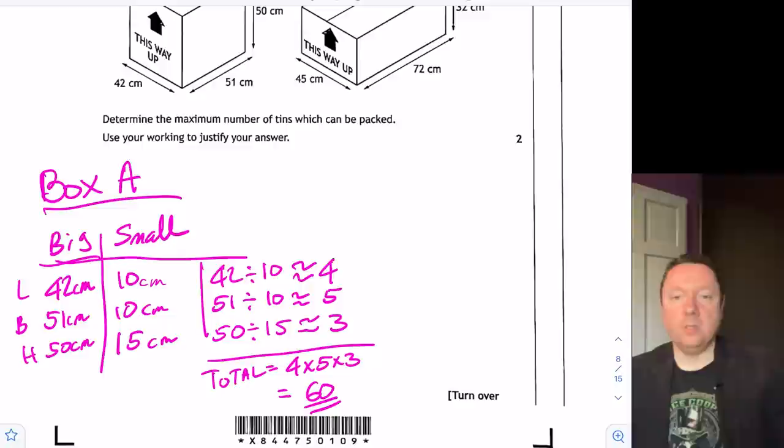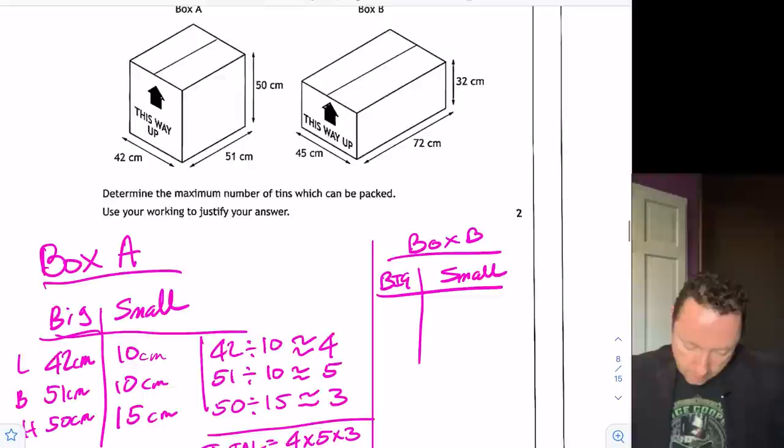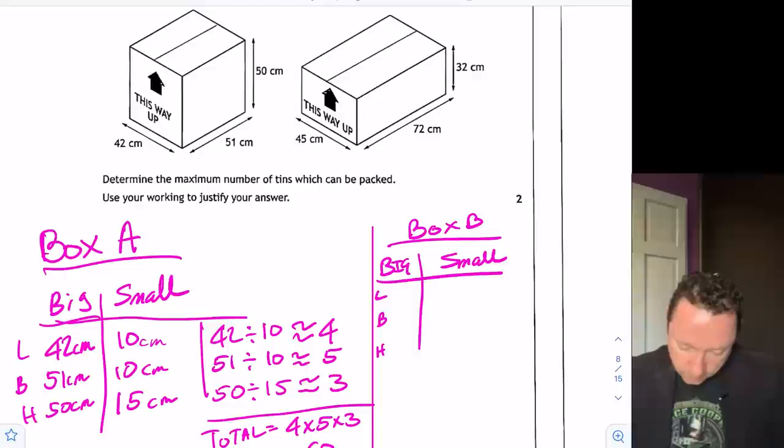Box B is exactly the same. So for box B, I always like to set it up as a table. My big box against my small box. And then length, breadth and height. So again length, breadth and height. So this time the length of this one, I use that, so 45. The other side is 72. And this time the height is 32. And again we need to have against the height our 15 centimetres because it has to face up the way. And then the 10 centimetres need to go against the other ones. So doing our sums.